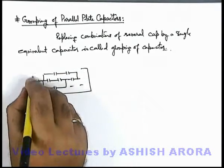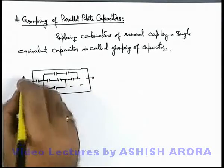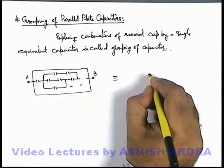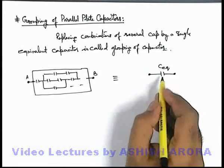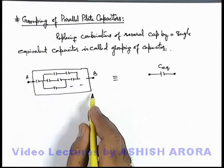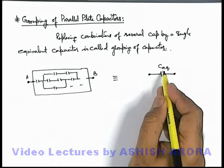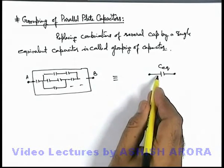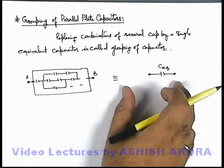Say if this is a group of capacitors and there are 2 terminals for the group of capacitors, say A and B. If it is replaced by a single capacitor which we can term as C equivalent, then this C equivalent is the equivalent capacitance of this group of capacitors. Its capacitance should be such that the same amount of energy will be stored by this single capacitor which is stored by the whole group of capacitors when a potential difference is applied across it.